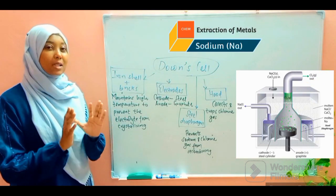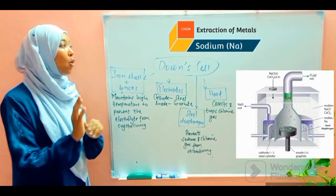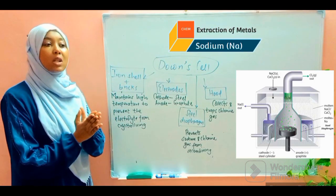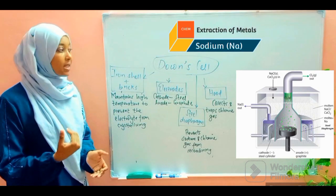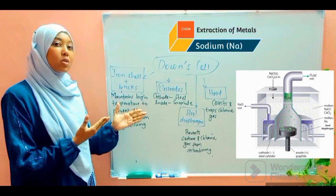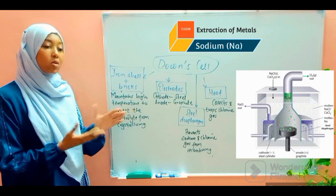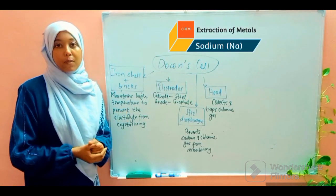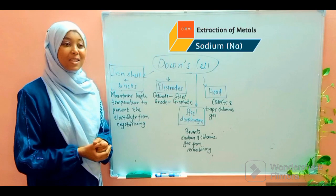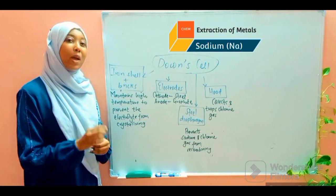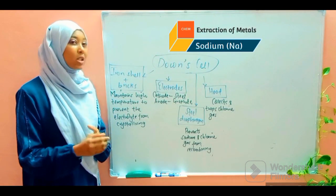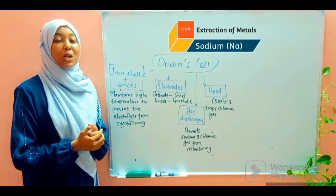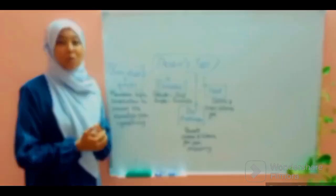To summarize the lesson with the advantages of using the Downs process: first, the chlorine gas produced can be utilized for many other different purposes. Second, the raw material used — rock salt — is abundant and relatively cheap, making the whole process economical. Please tune in to the next lesson where I will be discussing past KCSE questions that focus on extraction of sodium, to help you assess whether you've understood the concepts. I hope you have enjoyed our lesson and benefited from it. Thank you.